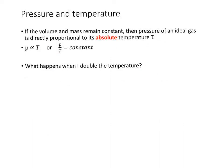The other relationship we need to know about is between pressure and temperature. If the volume and mass of the gas remain constant, then the pressure of an ideal gas is directly proportional to its absolute temperature in Kelvin. Absolute means it must be measured in Kelvin — we cannot use degrees Celsius. To convert from Celsius to Kelvin, simply add 273. So if I double the temperature, the pressure doubles.